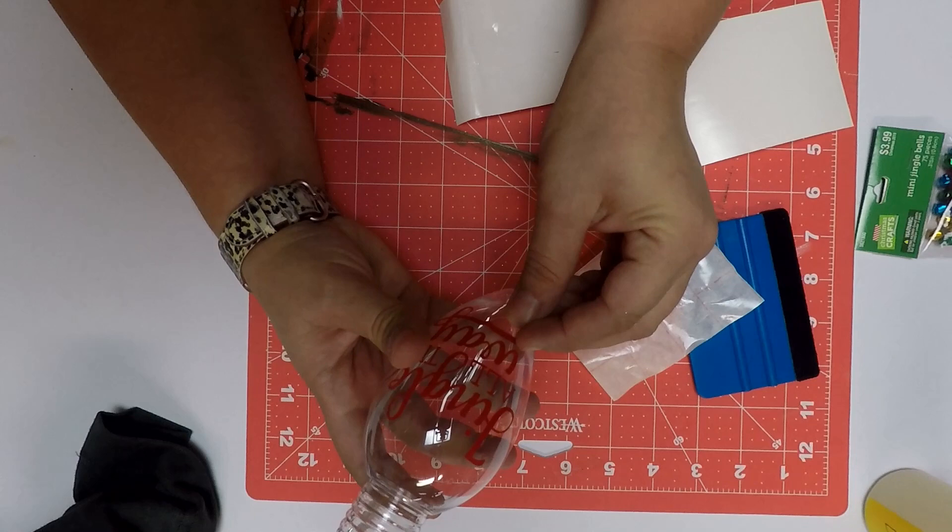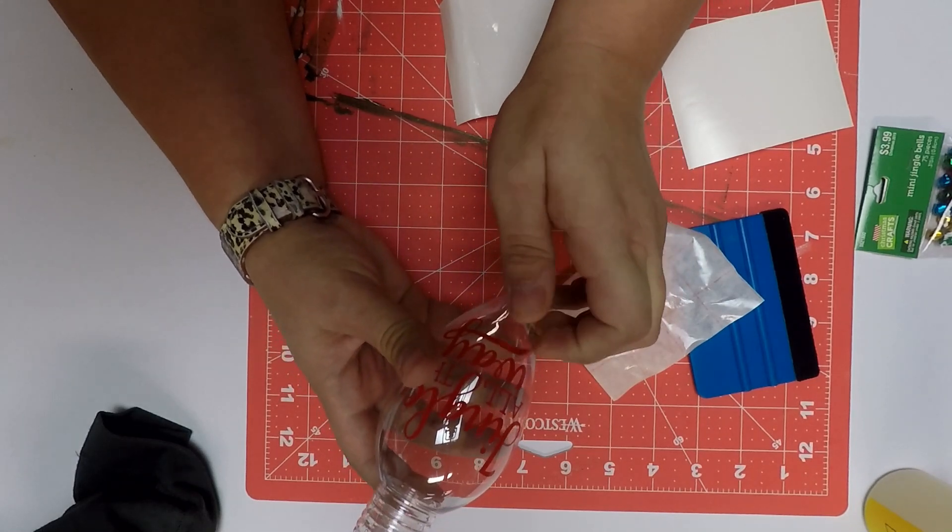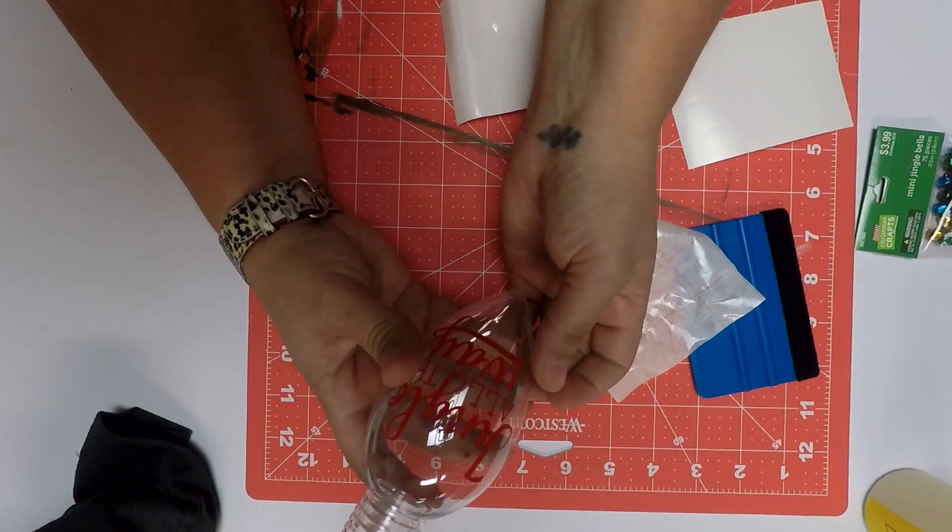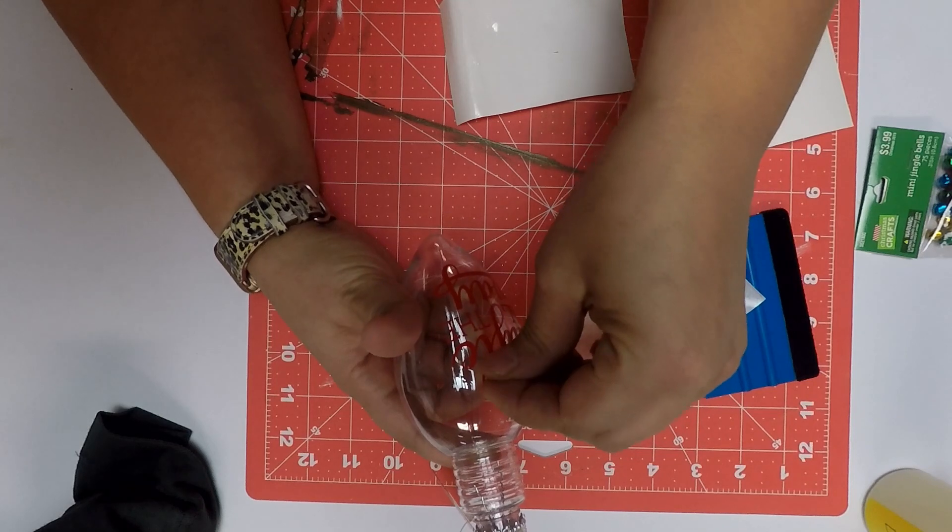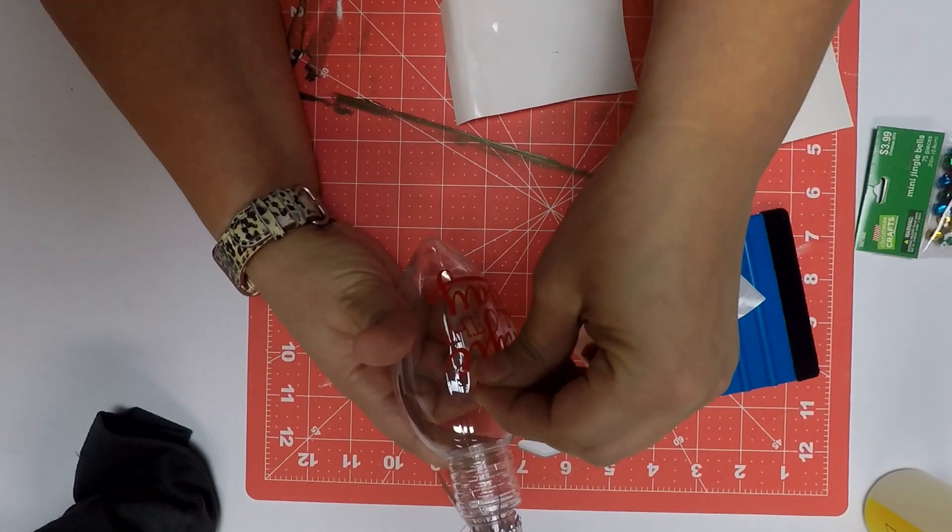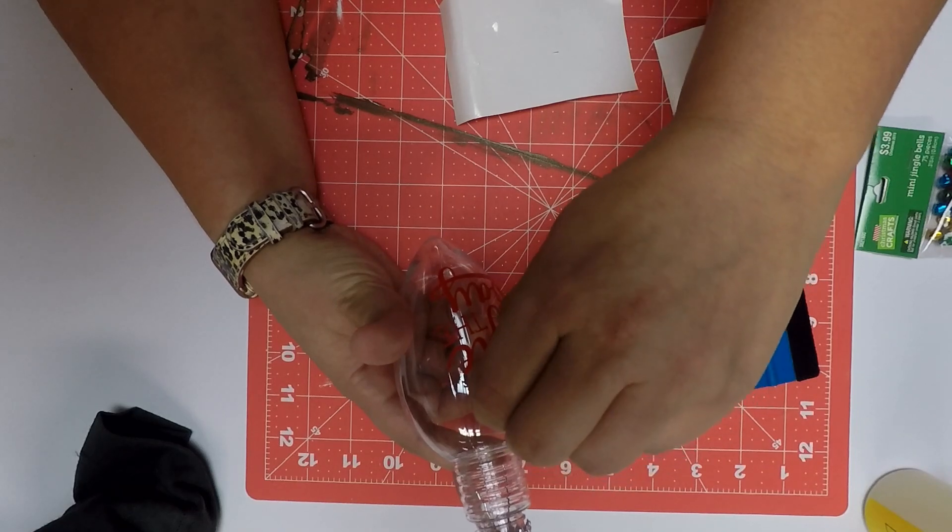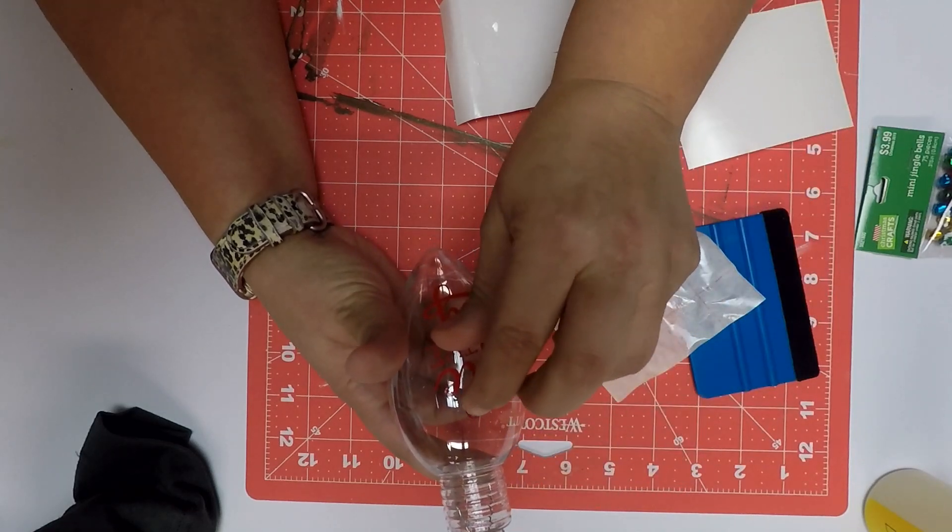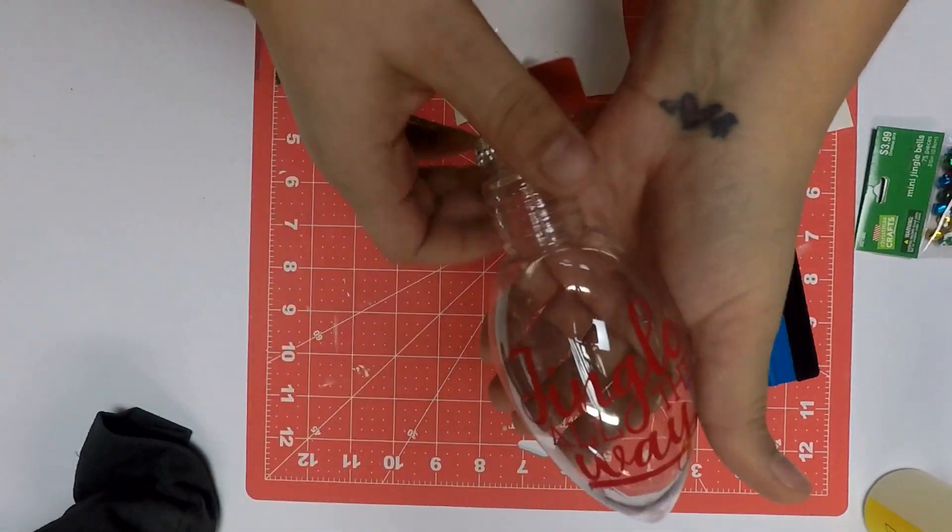The main area that I have any wrinkling is right here on the tail of way, and then right up here in the L on jingle. I'm going to just lightly lift that, and then smooth it back down. As you can see, that looks super cute.